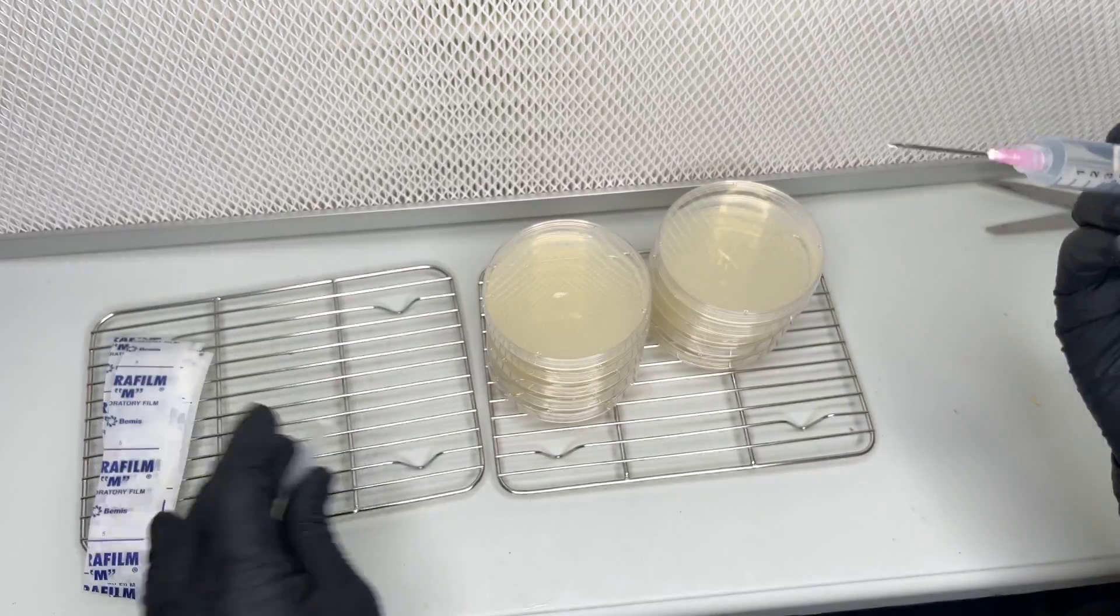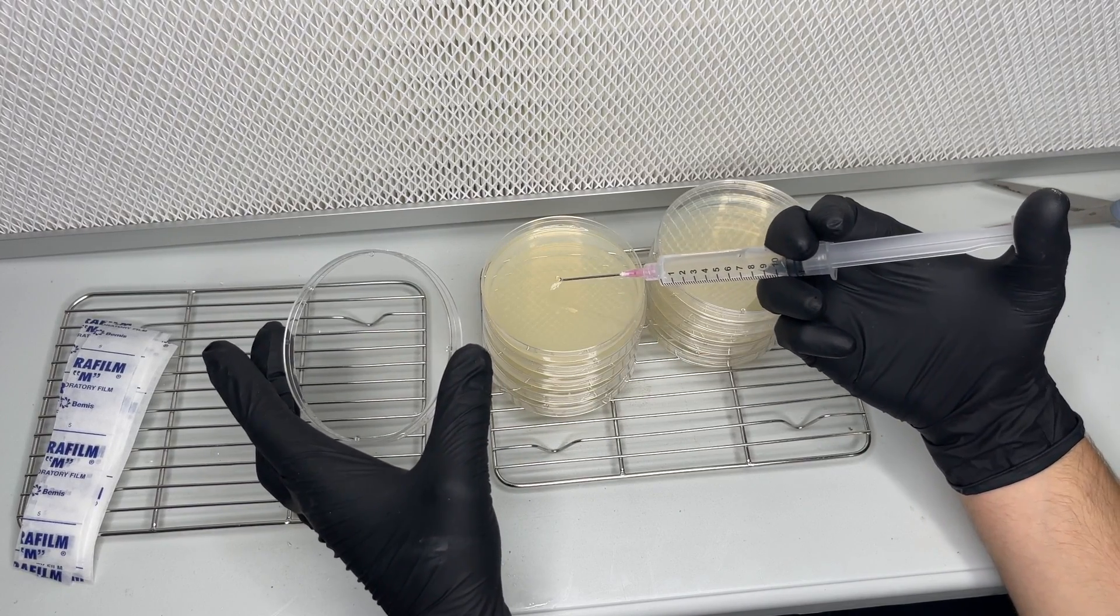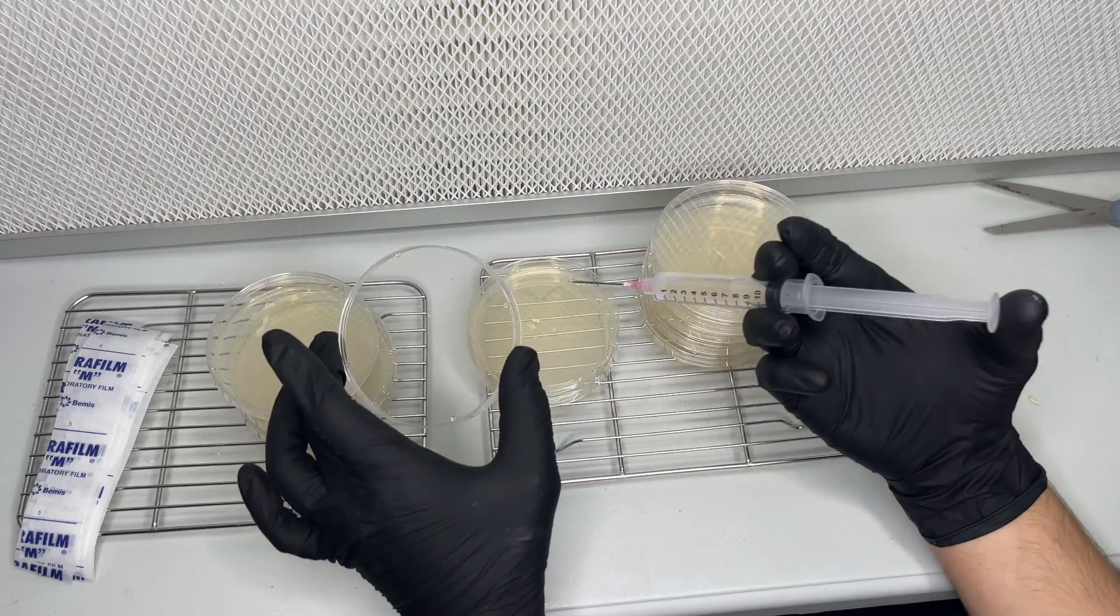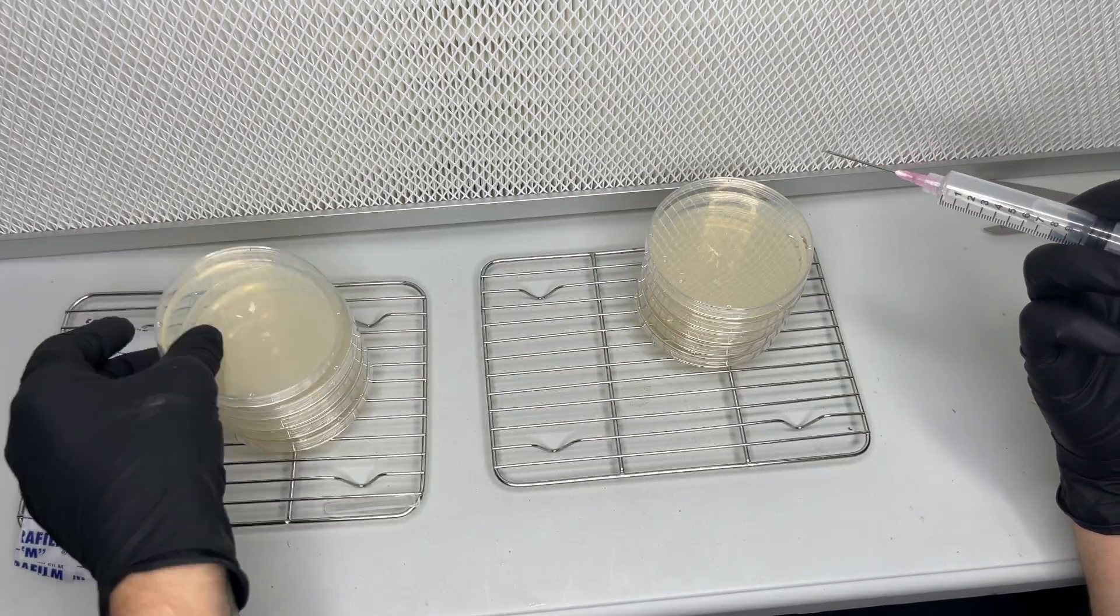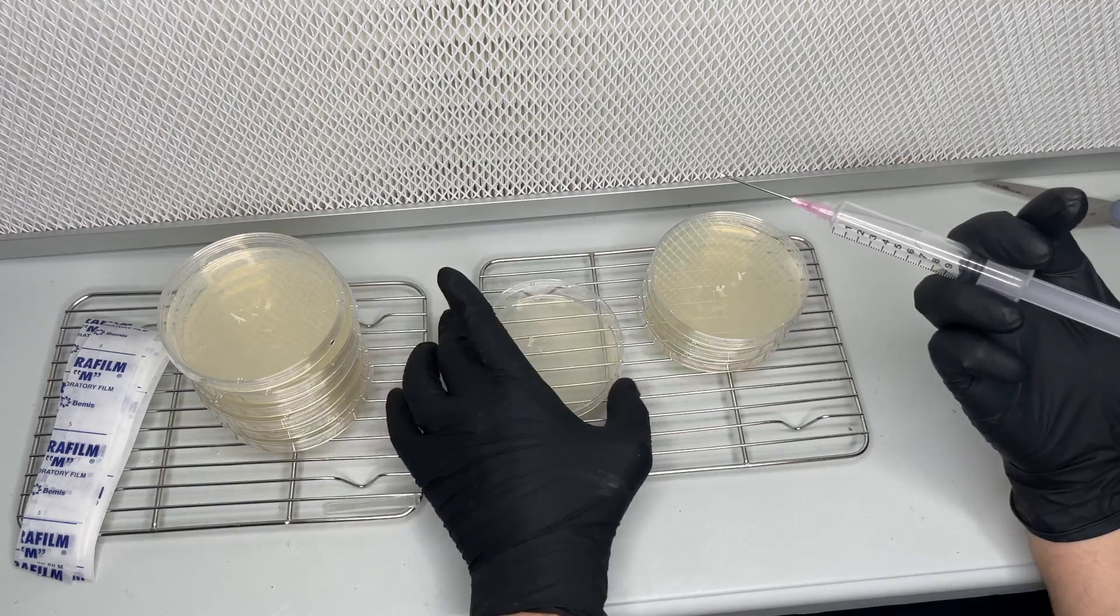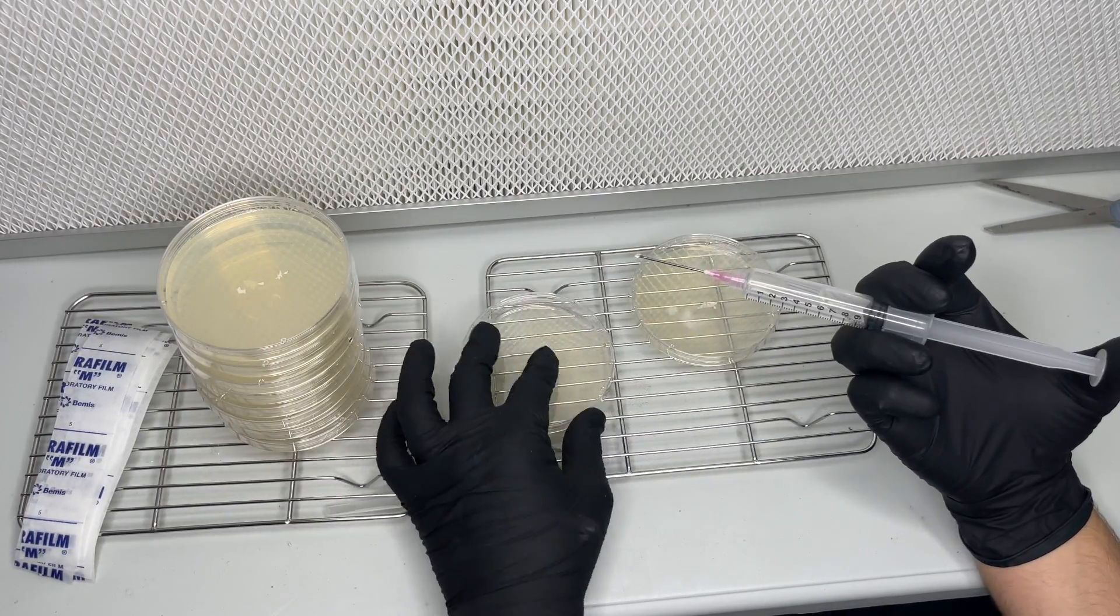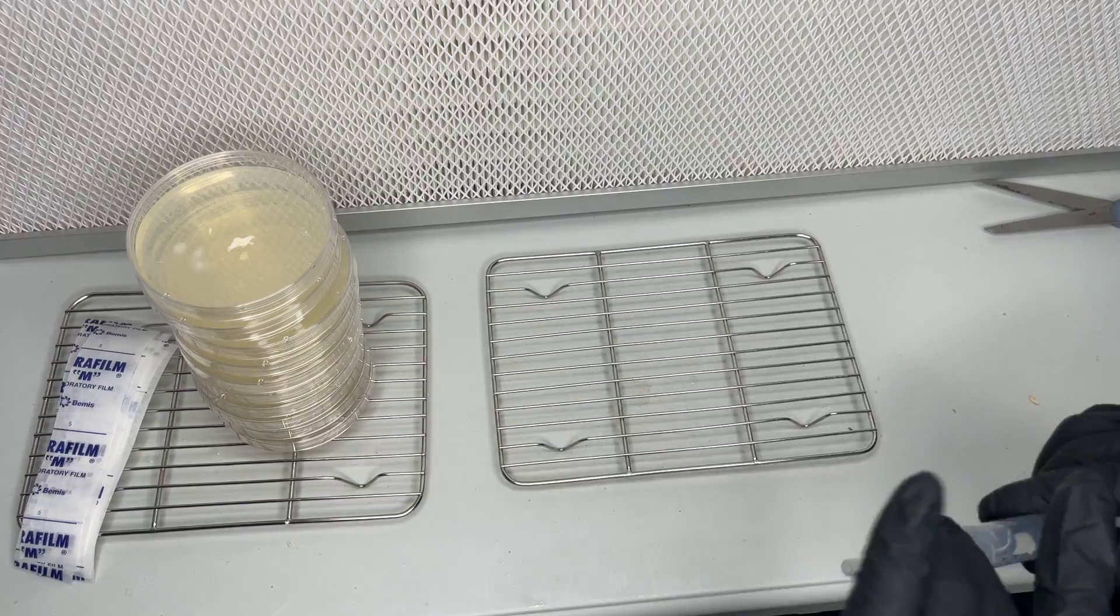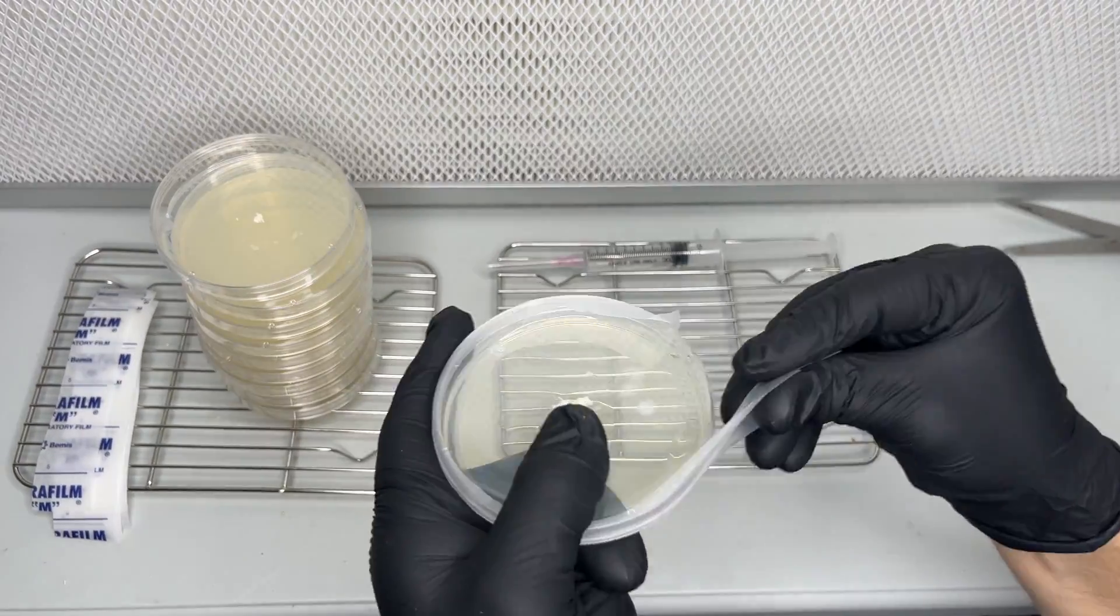After I was finished taking the transfers, I added a few drops of the sterile water to each of the plates. I wrapped each plate in parafilm and allowed them to incubate at 75 degrees Fahrenheit for two weeks.